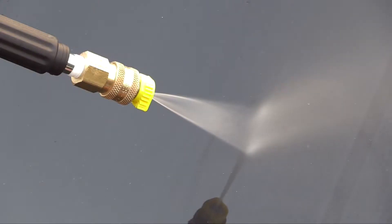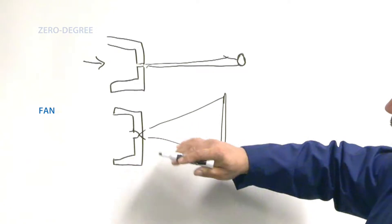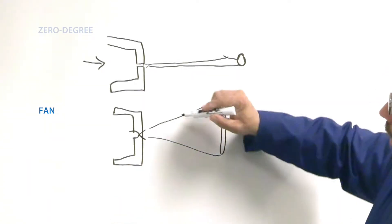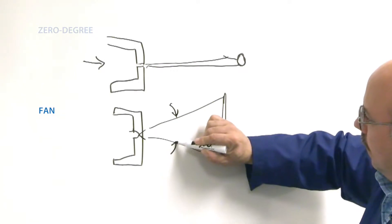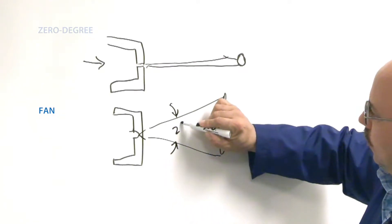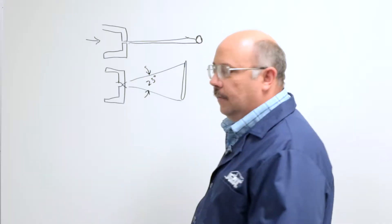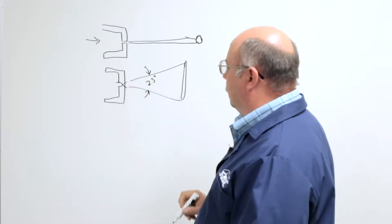This fan nozzle then is good for cleaning large surfaces, moving lots of debris, and things like that. And usually it'll have a degree associated with it. The degree is the measure of this angle. This could be a 25 degree nozzle, and it represents this angle that it emits from the nozzle.